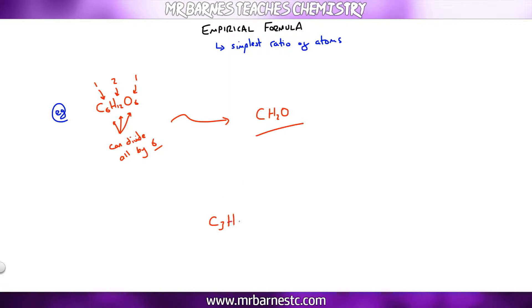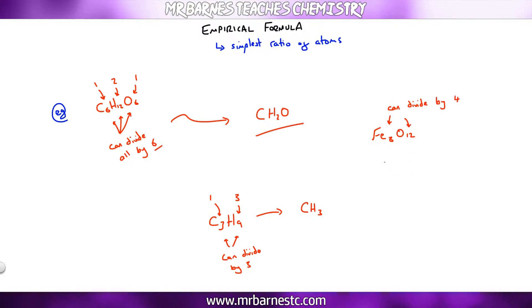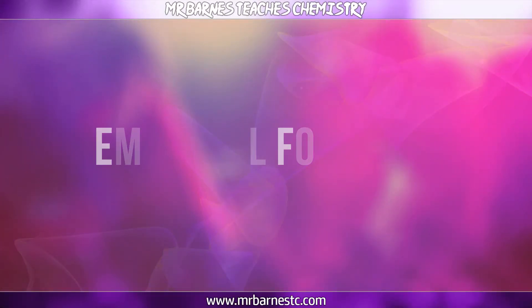Another example: C₃H₉ — both can be divided by 3, so 3 divided by 3 is 1, and 9 divided by 3 is 3, giving CH₃. And finally, both can be divided by 4: 8 divided by 4 is 2, 12 divided by 4 is 3, therefore Fe₂O₃. The key thing is this will only be worth one mark — it becomes a lot more complicated in the complex calculations.